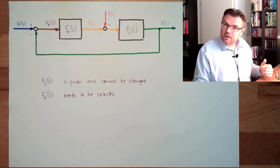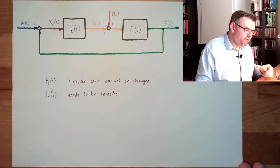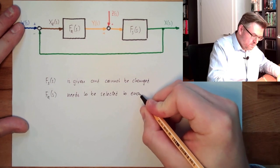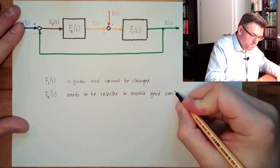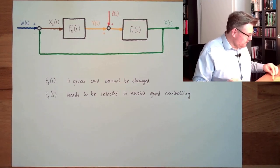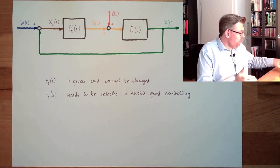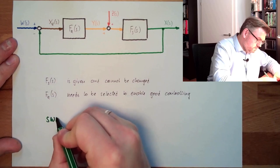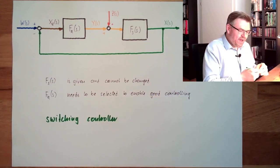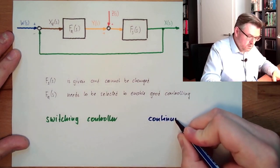How are we going to select it? That is the task of control engineering — it should help us to select a proper controller for the system, to enable good controlling. So we have to select fr. We have heard there are two different possibilities: on one hand there are the switching controllers, and on the other side there are the continuous controllers.